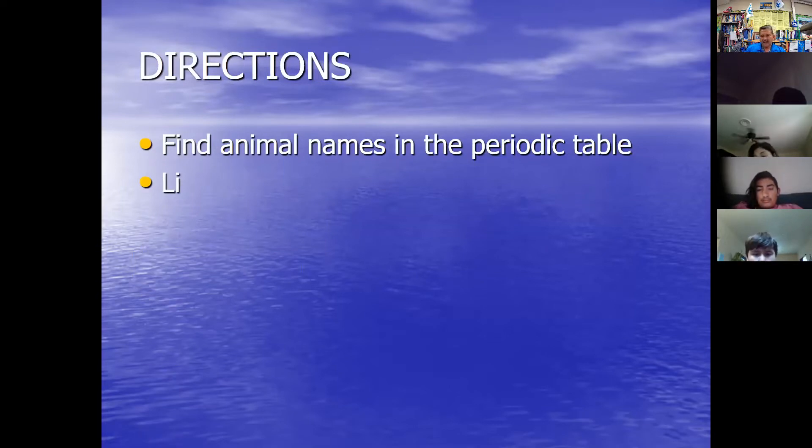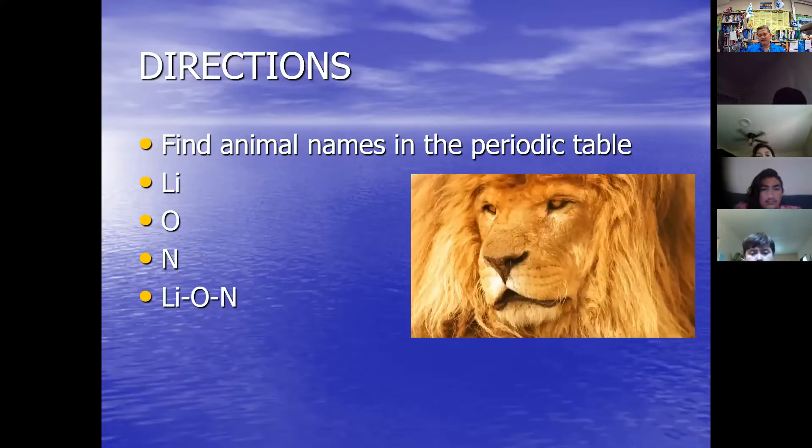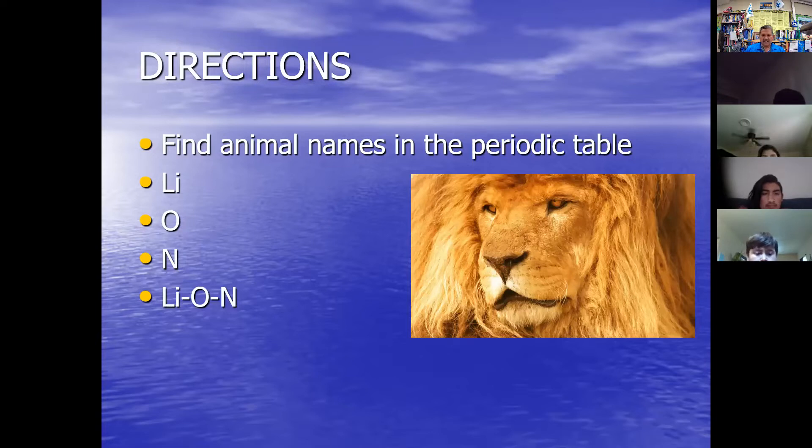This is lithium, Li. There's oxygen, O, and nitrogen, N. Put it all together. What do you get? A lion. So that is what we're doing. Trying to spell names of animals using letter combinations found in the periodic table of elements.